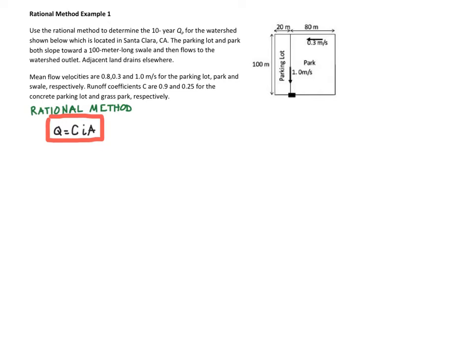is equal to C, a runoff coefficient that takes into account things like infiltration and the type of ground cover, times I, the intensity, which you'll get from intensity duration curves, and then A is the area. So we're going to go ahead and follow the steps outlined in Gupta.